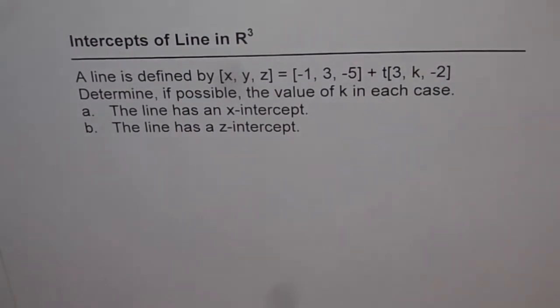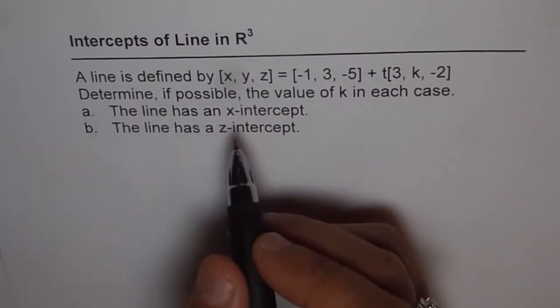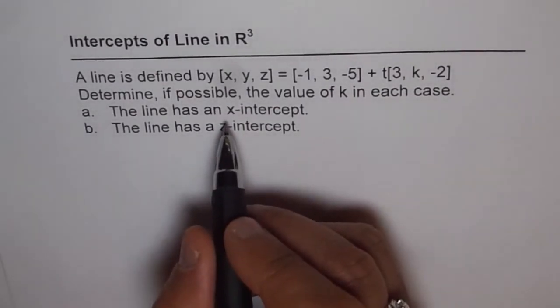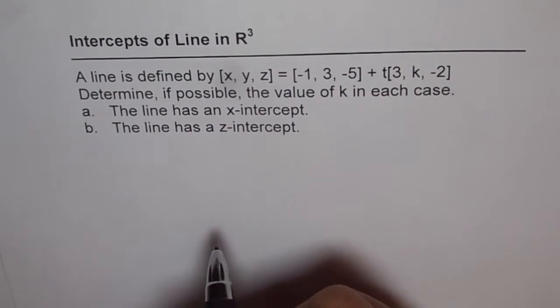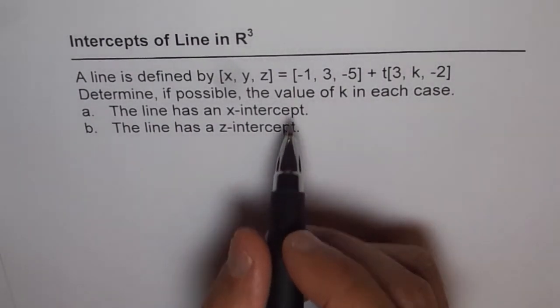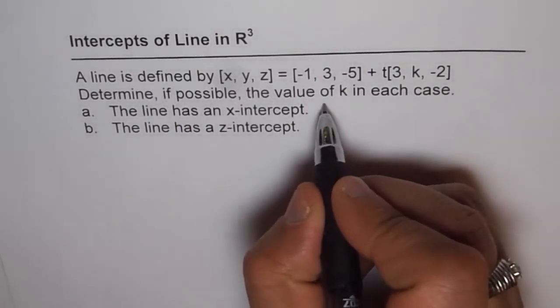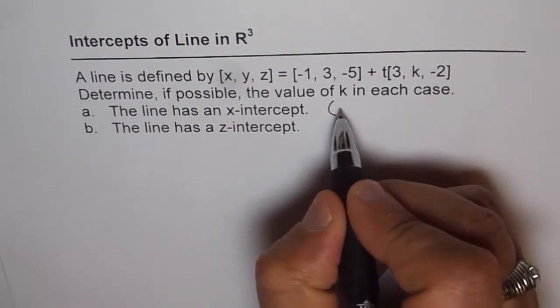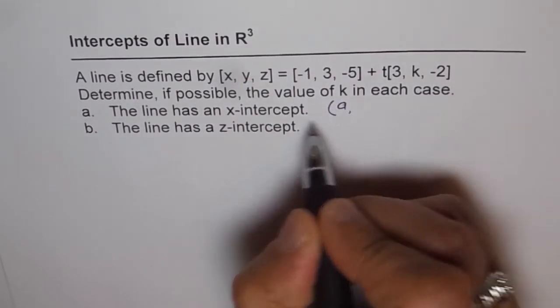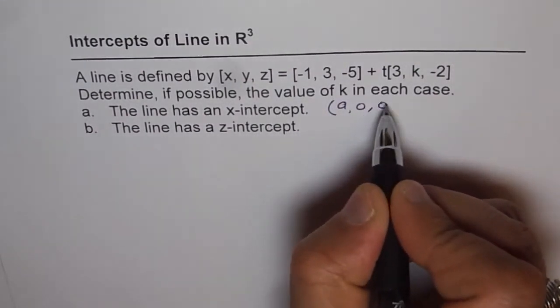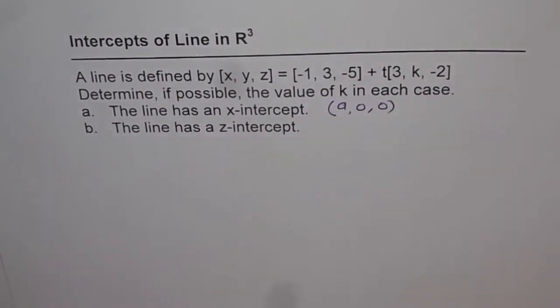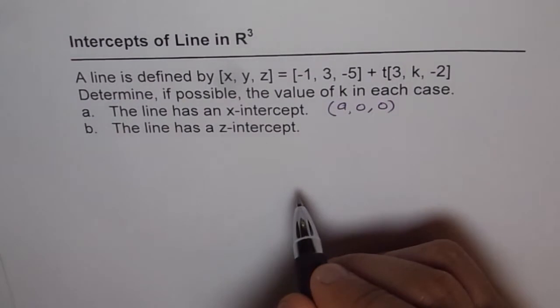I will do one of these questions for you. The next one you can do following the same pattern. Now, if a line has an x-intercept, at that x-intercept what could be the point? The point could be (a, 0, 0), the x-intercept value. That is the point which we are looking for. So we are basically looking for the value of a in this case.